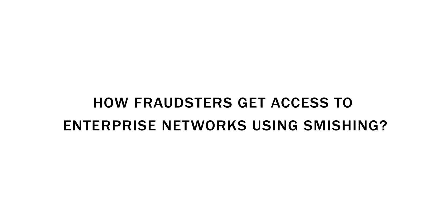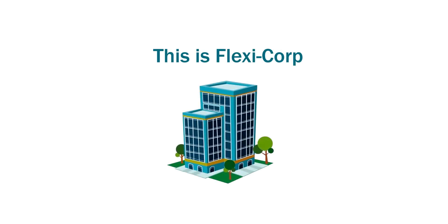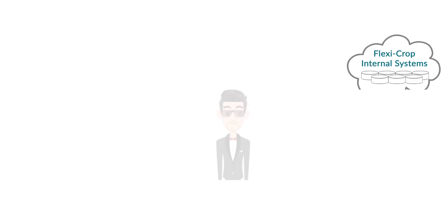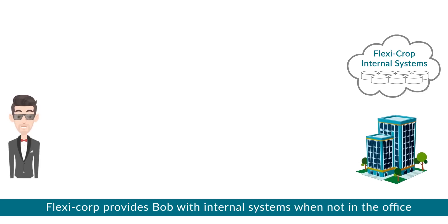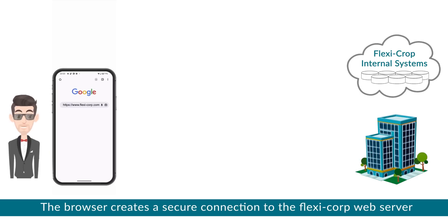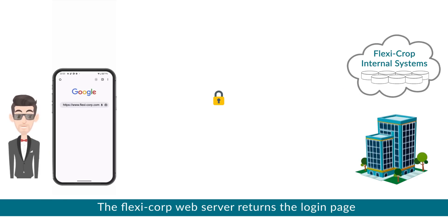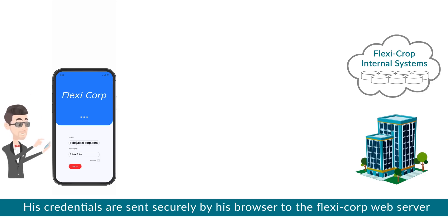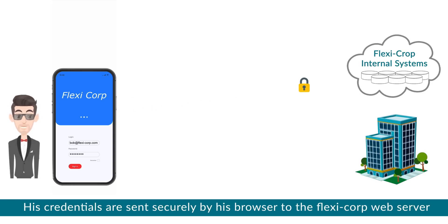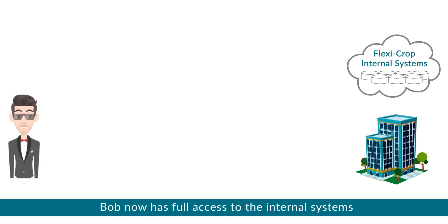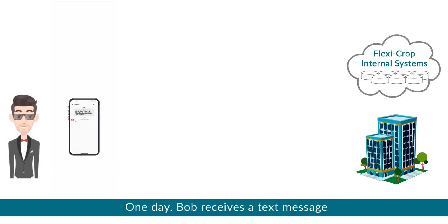How fraudsters get access to enterprise networks using smishing. This is Flexi Corp, and this is Bob — one of the Flexi Corp employees. Flexi Corp provides Bob with access to internal systems when not in the office. The browser creates a secure connection to the Flexi Corp web server, which returns the login page. Bob enters his credentials, which are sent securely to the Flexi Corp web server, and once verified, access is granted.